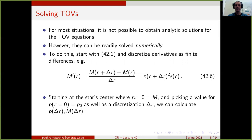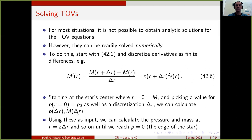The main point is that if we start at the star's center r = 0, where the mass is also zero, and pick a value for the central pressure p₀ as well as a discretization step Δr, then the discretized TOV equations can be solved to calculate the pressure and mass at location Δr. We then iterate to calculate the pressure and mass at 2Δr, and so on until we reach a point where the pressure equals zero — which we define as the edge of the star.